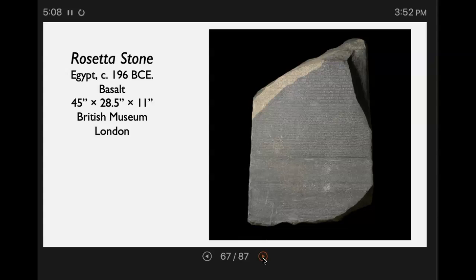It's written in those three types of writing or script. It was an important clue that helped experts learn to read ancient languages, becoming the code breaker for language. It's not a surprise that language programs today are called Rosetta Stone, because you're trying to decode and learn a new language.